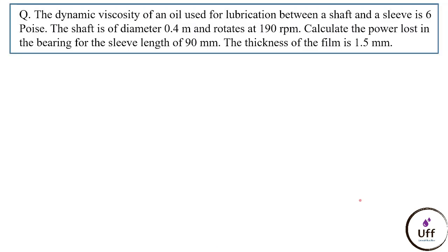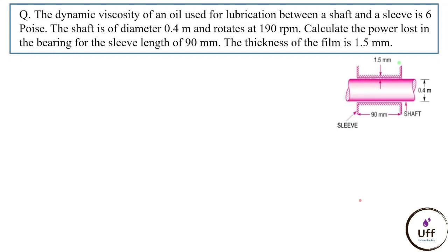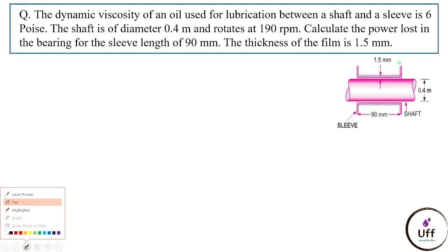Second question: the dynamic viscosity of oil used for lubrication between a shaft and sleeve is 6 poise. The shaft diameter is 0.4 m, rotating at 190 rpm. Calculate the power lost in the bearing for a sleeve length of 90 mm and oil film thickness of 1.5 mm.